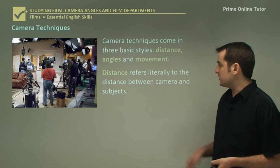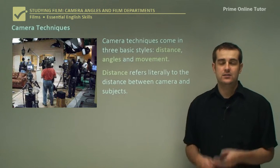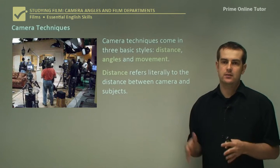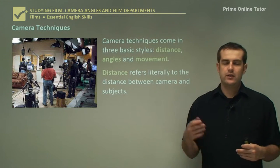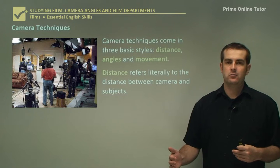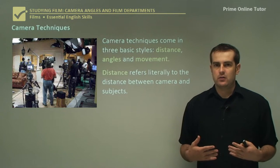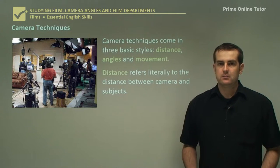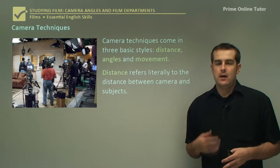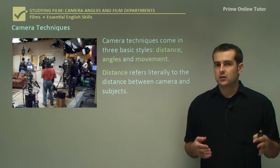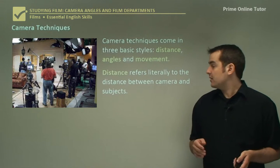They come in three basic styles: distance, angles and movement. Distance is literally that — the distance between the camera and the subject. So in our case here we've got a medium shot, which is basically me from the waist up. However, it can be something like a long shot from far away to a close up.